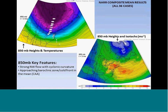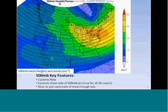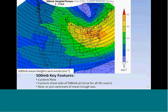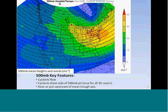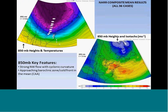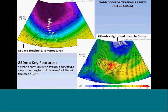At 500 millibars, we again see cyclonic flow. Notably, all 36 cases place our region on the cyclonic shear side of the 500-millibar jet. The six-hour animation spanning from three hours before to three hours after the squall shows cyclonic flow aloft and a position near or just upstream of the mean trough axis. At 850 millibars, strong northwesterly flow with cyclonic curvature is evident, along with an approaching baroclinic zone or cold front with strong cold advection from Quebec across New York and New England.